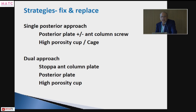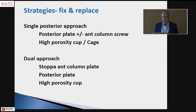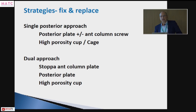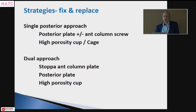There are essentially two approaches. The one I use is a single posterior approach: posterior plating, fixing the wall, optionally an anterior column screw, then using either a high-porosity cup or a cage with a cup. The other approach described — though I have no personal experience with it — is a dual approach: first a Stoppa approach to fix the anterior column, then turning the patient to a lateral position, fixing the posterior column posteriorly, and then doing the total hip.